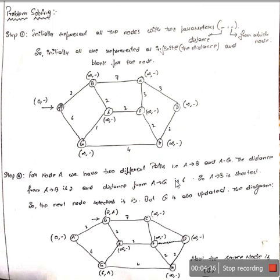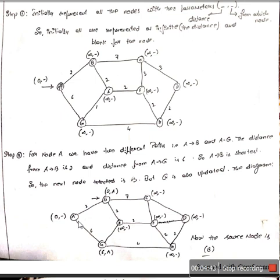From source node A, we find the shortest path to its neighbors B and G. Since there are no intermediate nodes from A to B, the only path gives distance 2, so B is updated to (2, A). For G, the distance is 6, so G is updated to (6, A). Now among the unvisited nodes B and G, the shortest is 2, so we select node B as the next source node. Node A is now completed.